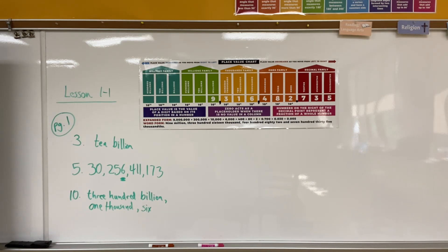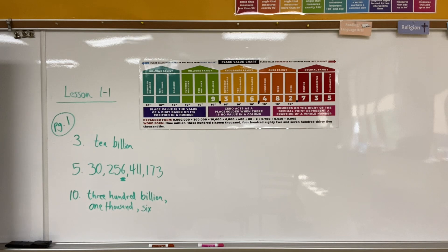Alright, fifth grade friends, if we take a look at page one, we'll be doing practice problems number three, five, and ten. For number three: write the name of the place that is 10 times the given place — remember, we go to the left. For number five: write the place of the underlined digit, then write its value. For number ten: write the number in standard form — the number is 300 billion, 1,006. If you have any questions about place value to billions, please let me know when you bring this to class tomorrow.